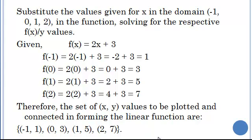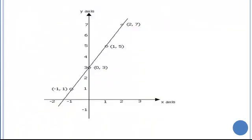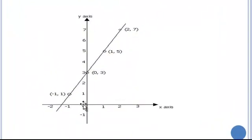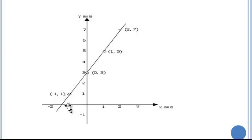The next step is to plot those points on the graph. To plot a point, find the x value on the x-axis first — for example, minus 1 is here — then find the corresponding y value on the y-axis. After plotting all four points, draw a line through them, and that is the graph of the linear function.